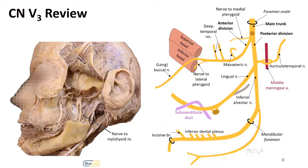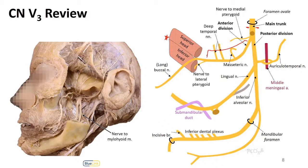Bringing back a visual from a previous session, we see the main trunk passing between the lateral pterygoid muscle and the tensor veli palatini. Over here is the lateral pterygoid muscle. In schematics things are more spread out. This is a fairly short area — the anterior division is exaggerated in length here, as it gives off many muscular branches right away — but it shows the relationship between the trunk and anterior division with the lateral pterygoid and tensor veli palatini.